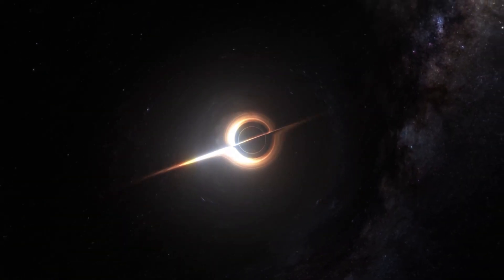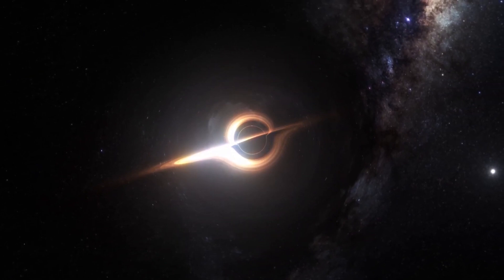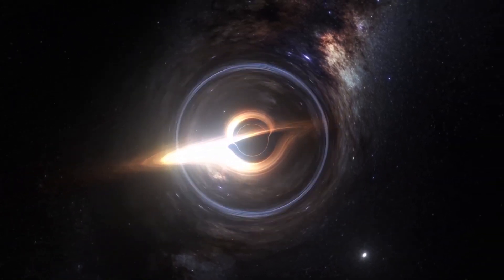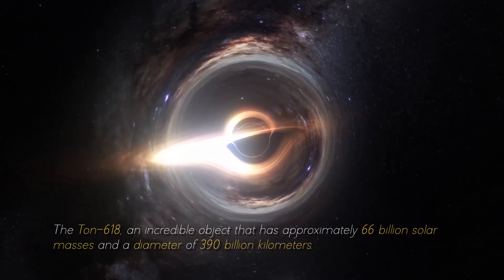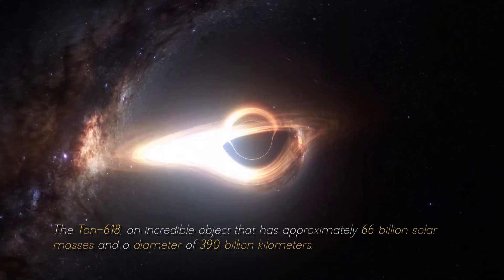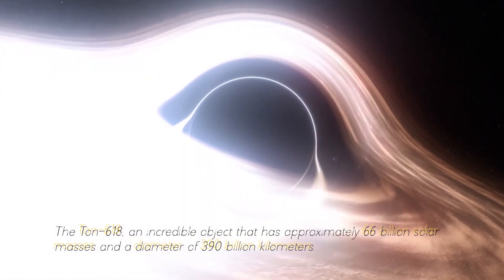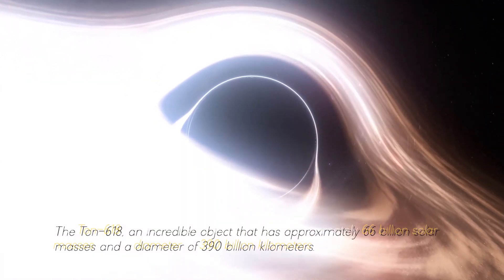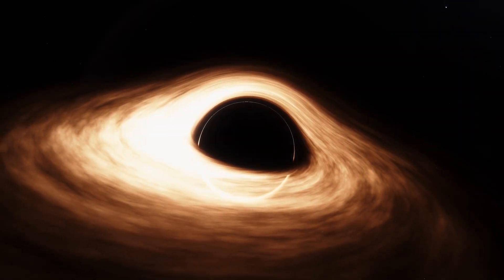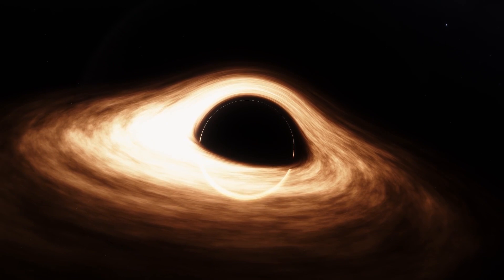Not everything ends here. This star cannot be compared with the most massive black hole in our cosmos, the Ton 618, an incredible object that has approximately 600 billion solar masses and a diameter of 390 billion kilometers. For now, we will stop measuring in kilometers and start measuring in light years.